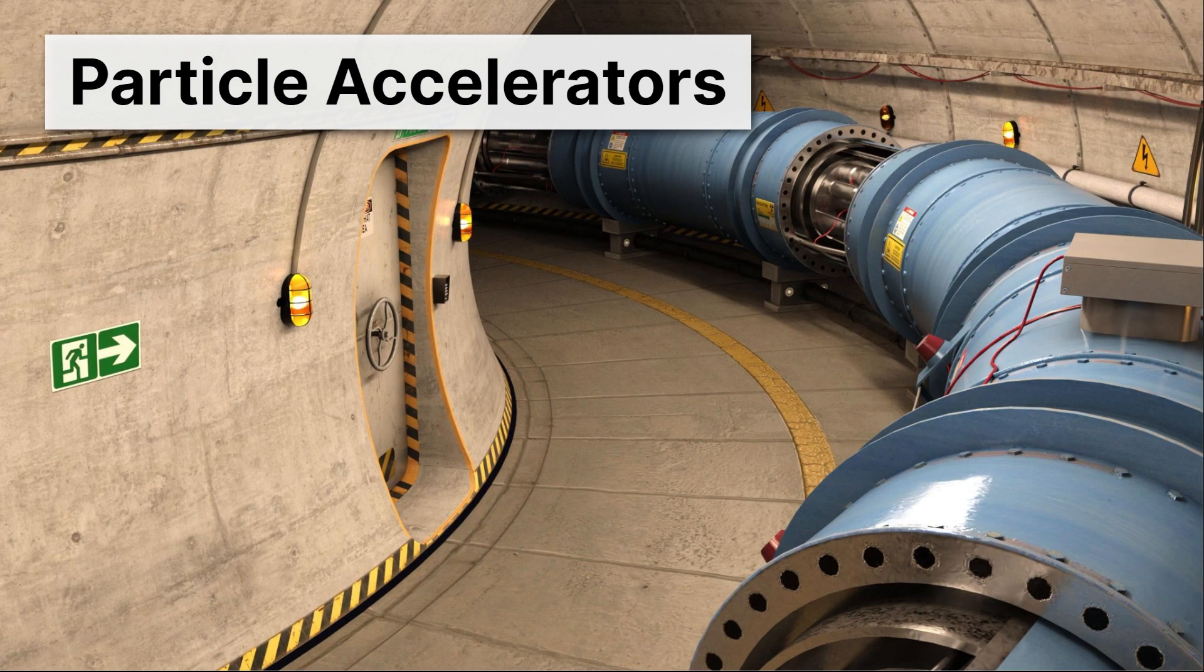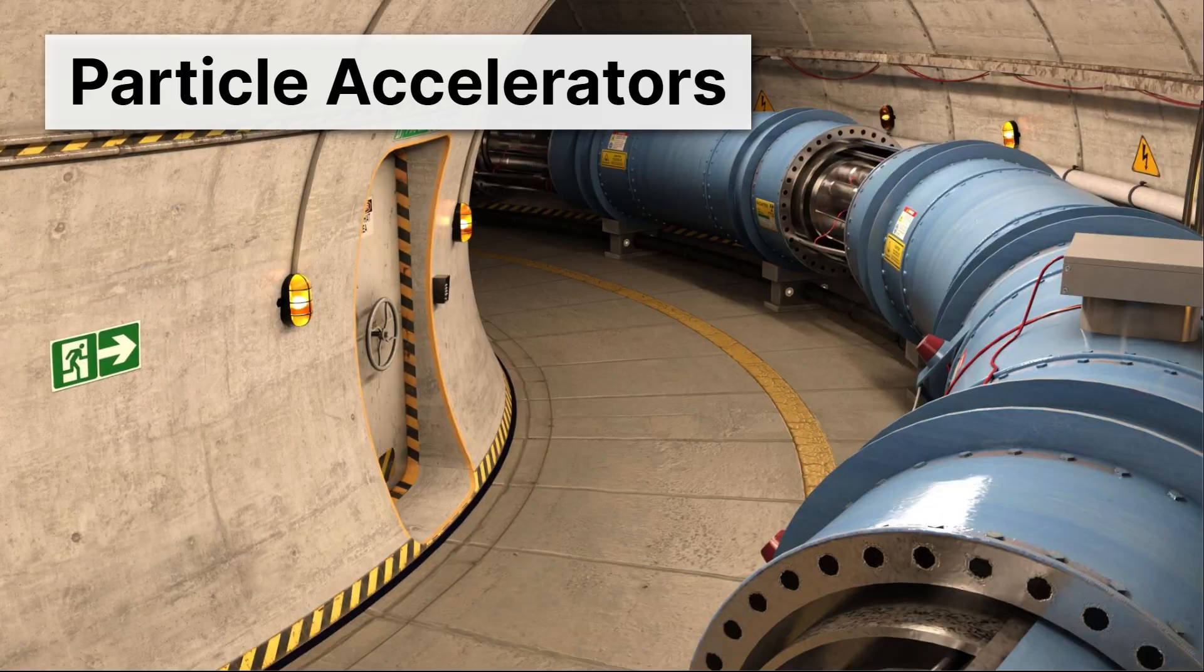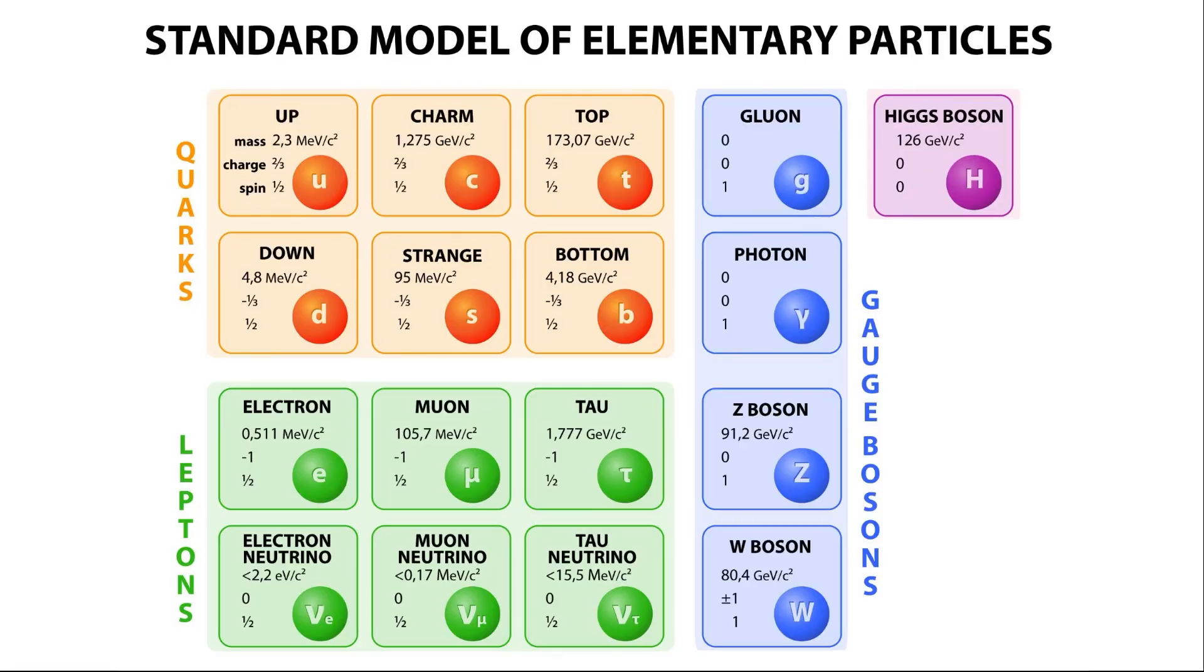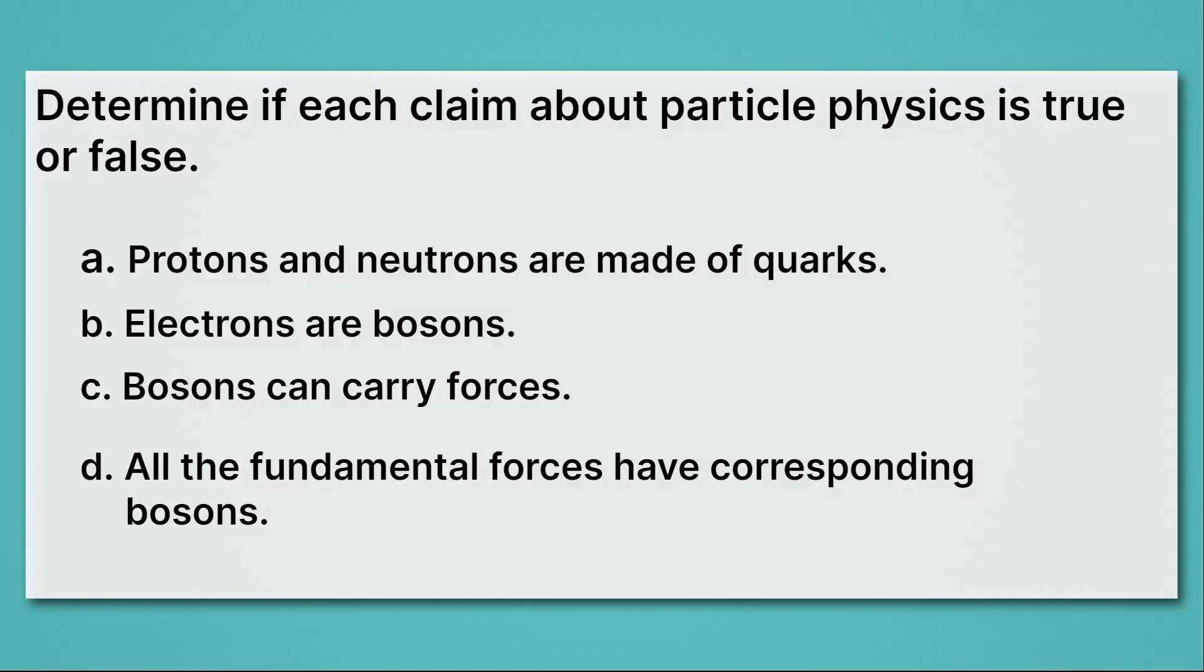The most recent discovery was something called the Higgs boson, which was discovered in 2012. And that gives us our complete standard model of elementary particles. Here they are, all of the particles that we know of that make up matter. As we've said, the up, down quarks, and the electron are by far the most important. But you can see also that things like photons, gluons, and the other bosons are really important as well.